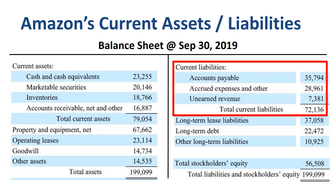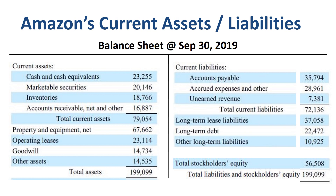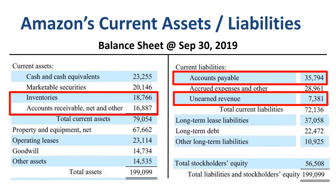In current liabilities, half of the total amount is in accounts payable. Non-current liabilities are $70 billion. Amazon's working capital is actually a negative amount, which is a positive thing for the business from the perspective of cash flow. The sum of inventories and accounts receivable on the left is $36 billion, while the sum of accounts payable and deferred revenue on the right is $43 billion. So total net working capital is negative $7 billion, which means Amazon's suppliers and customers are financing Amazon for more than Amazon is financing its inventory and customers.